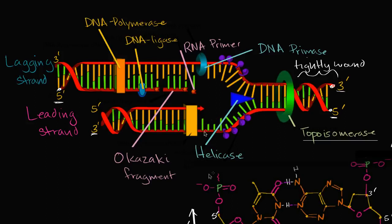Then we think about the two strands differently. Because you can only add nucleotides going from the five prime to the three prime direction, the bottom strand — which we call the leading strand — has it pretty straightforward. This is the five prime end right here, so it can add going in that direction, five prime to three prime. To start the process, you need an RNA primer, and the character that puts down an RNA primer is DNA primase.